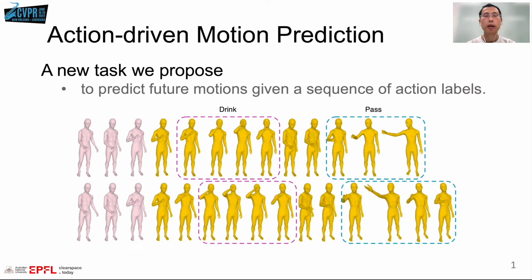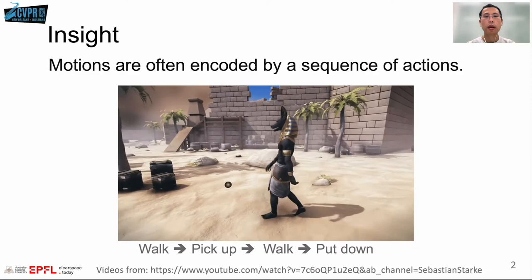In this paper, we propose a new task, action-driven motion prediction. Given an observation shown in pink and a sequence of action labels, this task aims to predict future motions that respect these conditions.